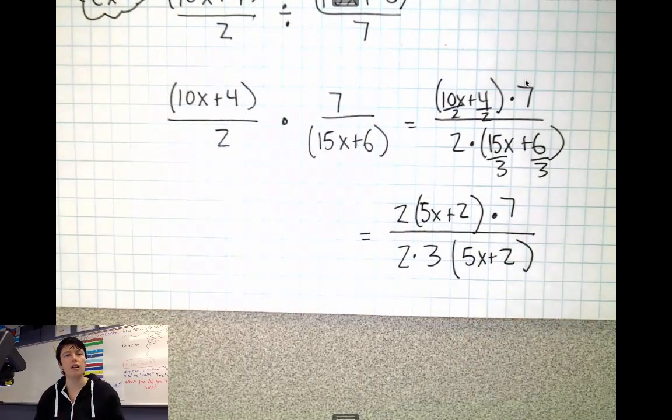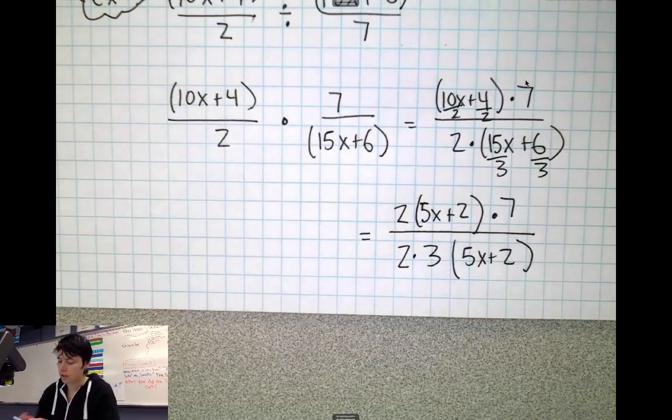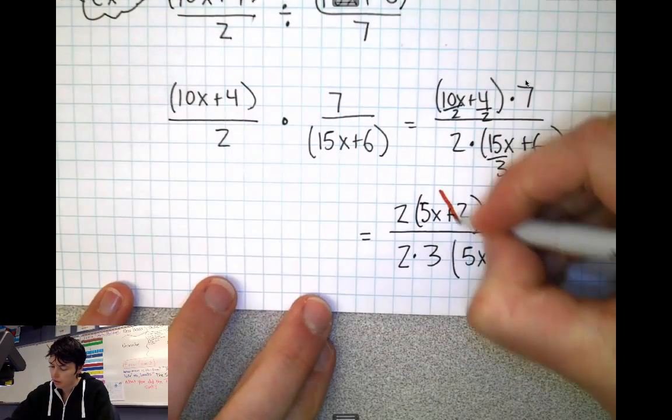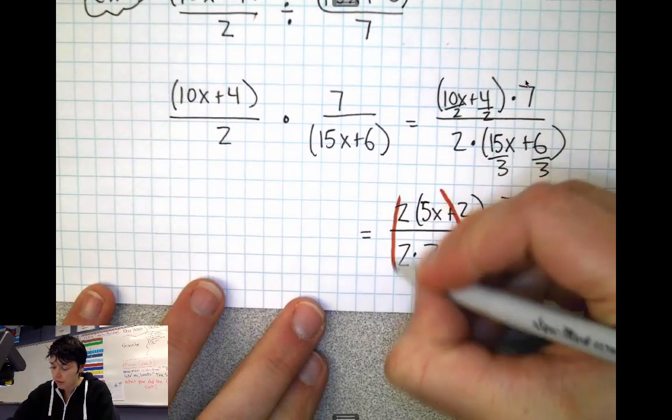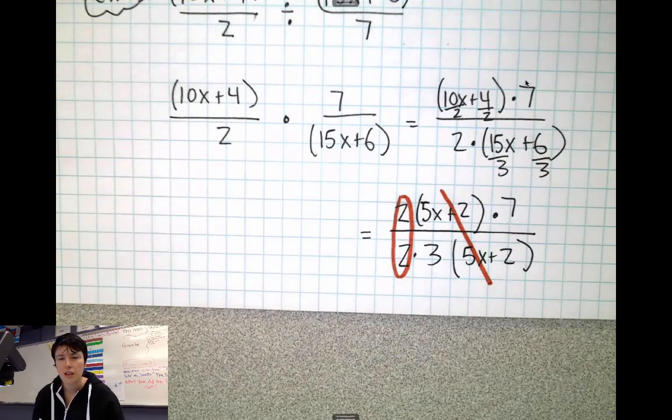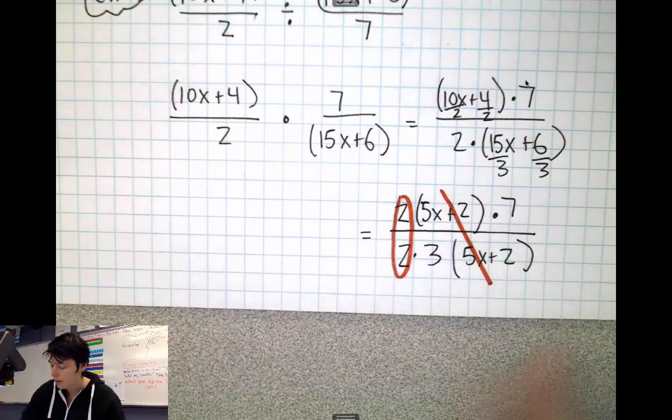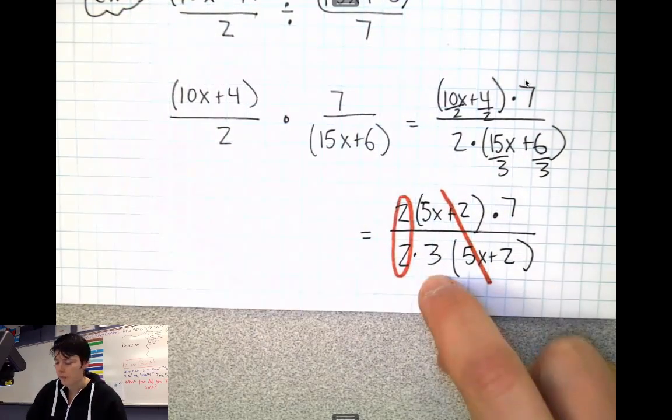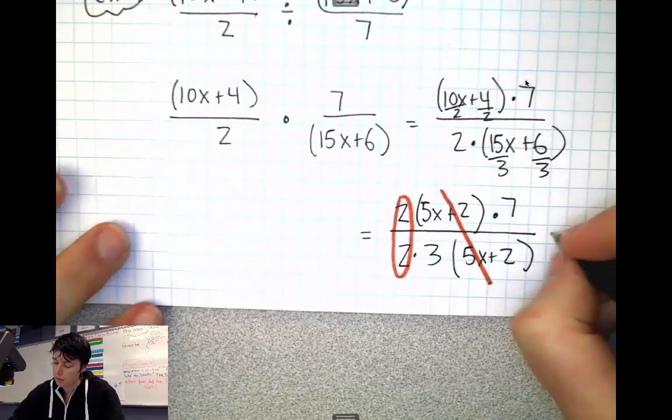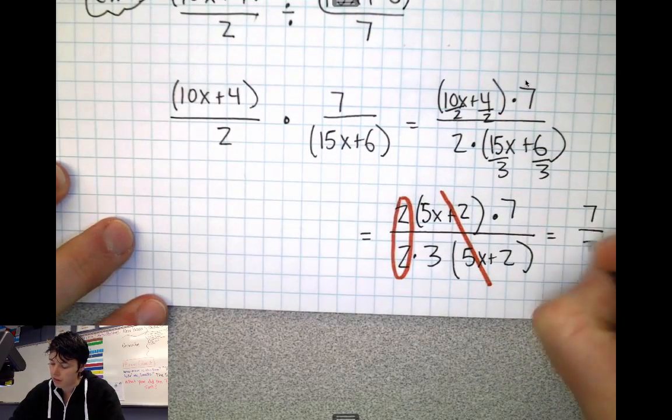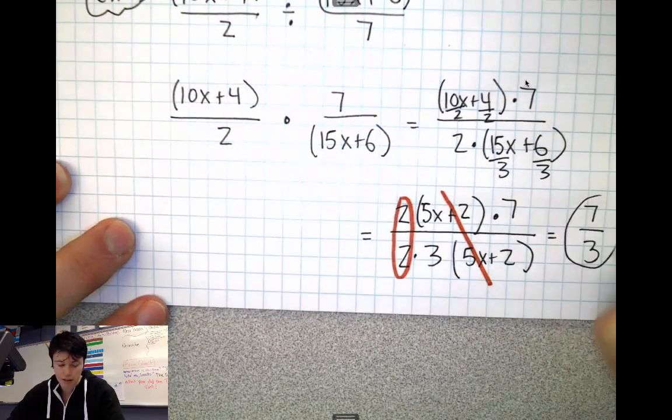And now I'm ready to start getting rid of some of these power of 1s. So like the (5x+2)'s can go. These 2's out in front, I can get rid of those. And I'm left with, on top, a 7 and on bottom, a 3. So this whole entire thing is going to reduce down to 7/3, seven thirds. And that makes up my final answer.